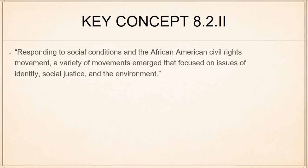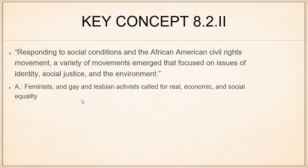Key Concept 8.2, Roman numeral II is about other reform groups. The College Board's language says: responding to social conditions and the African American Civil Rights Movement, a variety of movements emerged that focused on issues of identity, social justice, and environment. The African American Civil Rights Movement gets about half the credit here, and that seems about right — it's really that movement that galvanizes these other groups together to say, 'African Americans are making some strides, maybe we could as well.'